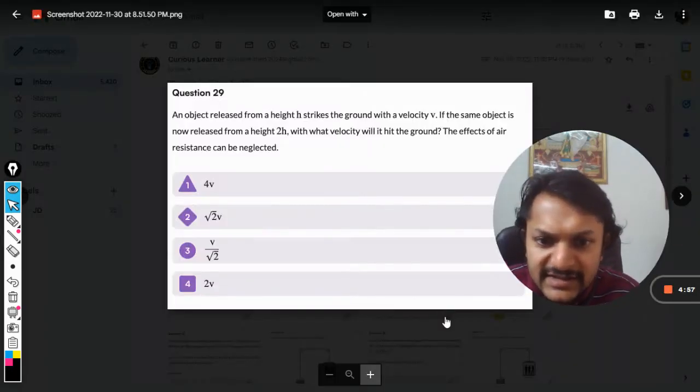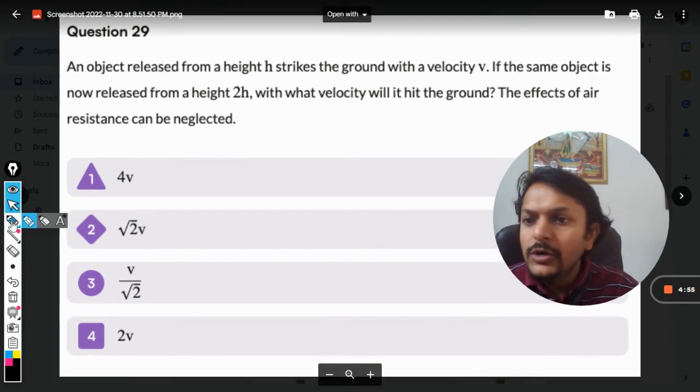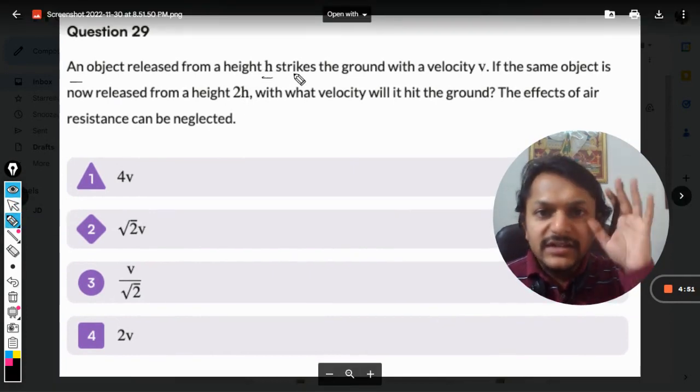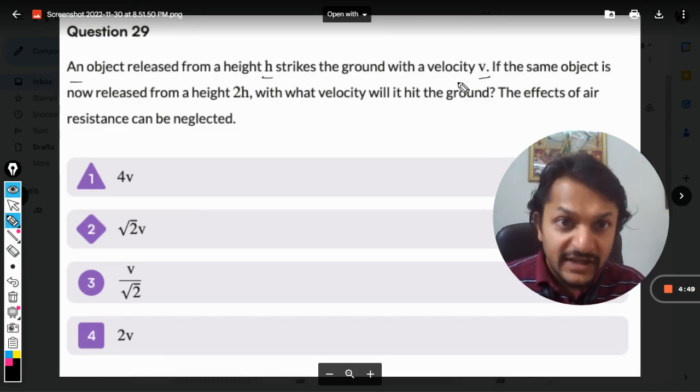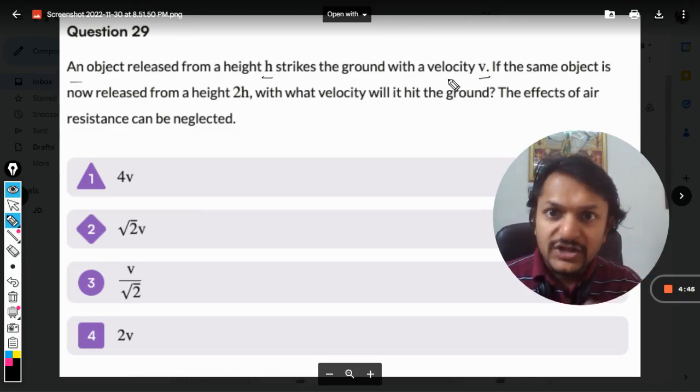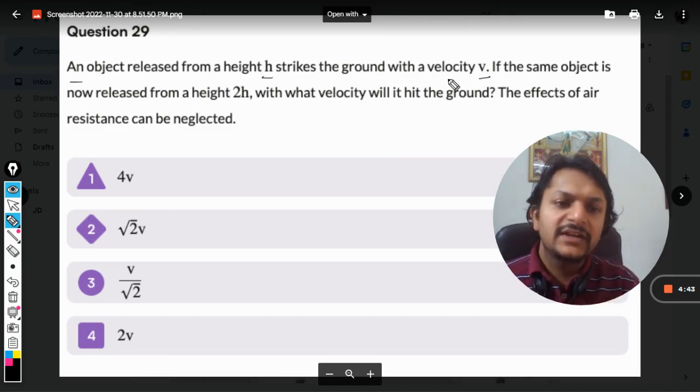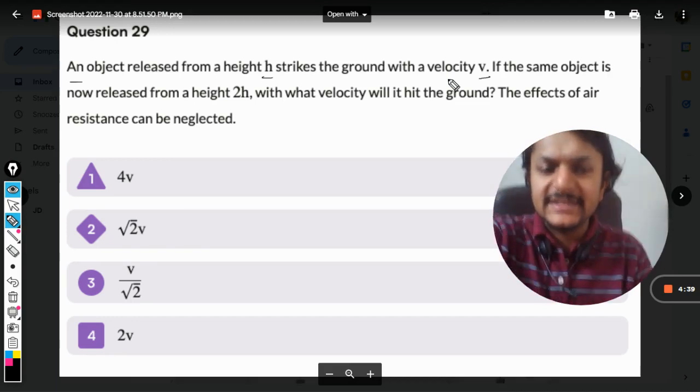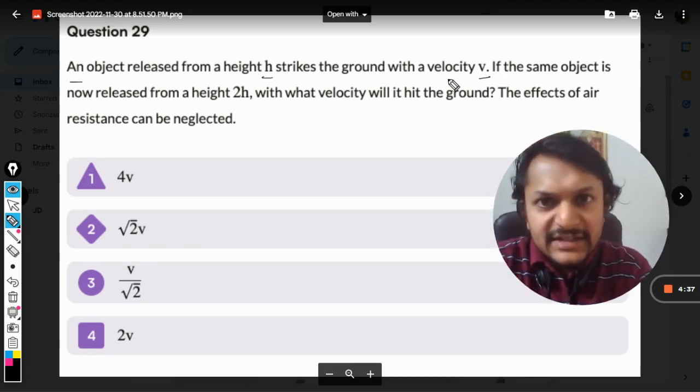Okay, dear students, let us see this question. An object released from height h strikes the ground with velocity v. If the same object is now released from height 2h, with what velocity will it hit the ground? The effects of air resistance can be neglected.